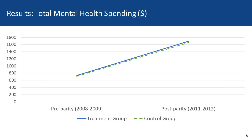To start going through the results, here we have graphed the pre and post total mental health spending for the treatment group and the control group. You'll see that the solid treatment group line and the dotted control group line line up pretty well for both the pre-parity and post-parity period numbers.